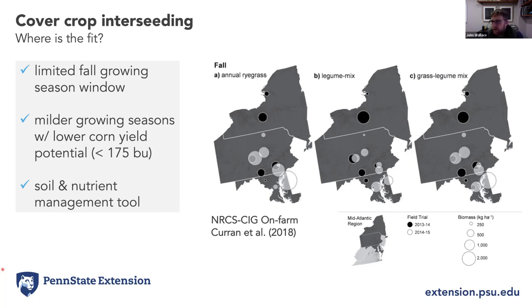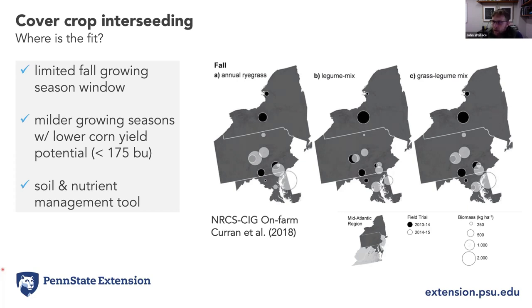There's a fair amount of variability as far as what affects performance of interseeding cover crops, but in our areas with milder growing seasons and lower corn yield potentials, we typically see better interseeding performance relative to high-yield-potential areas where we're harvesting north of 200 or 225 bushels per acre. The fit is really about achieving the same conservation goals we'd expect from post-harvest seeding — protecting the soil and nitrogen scavenging from our fall cover crops.